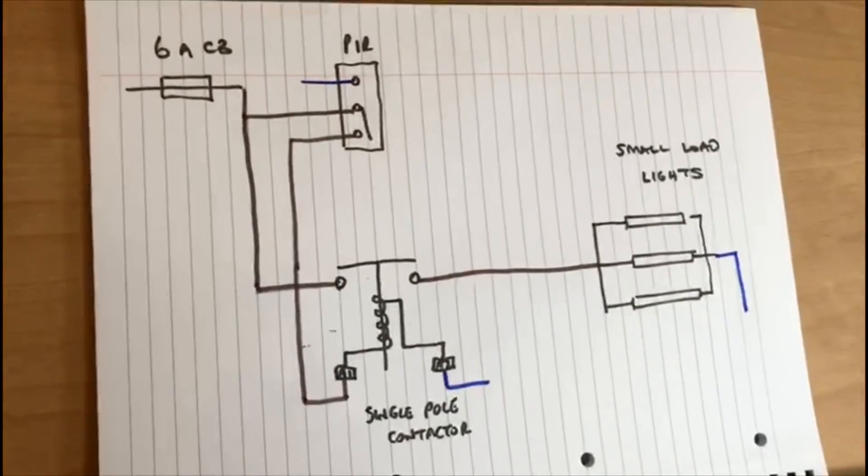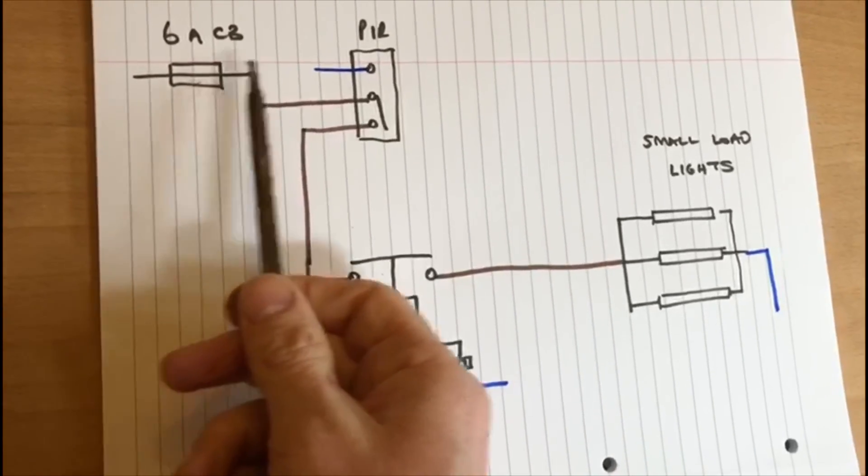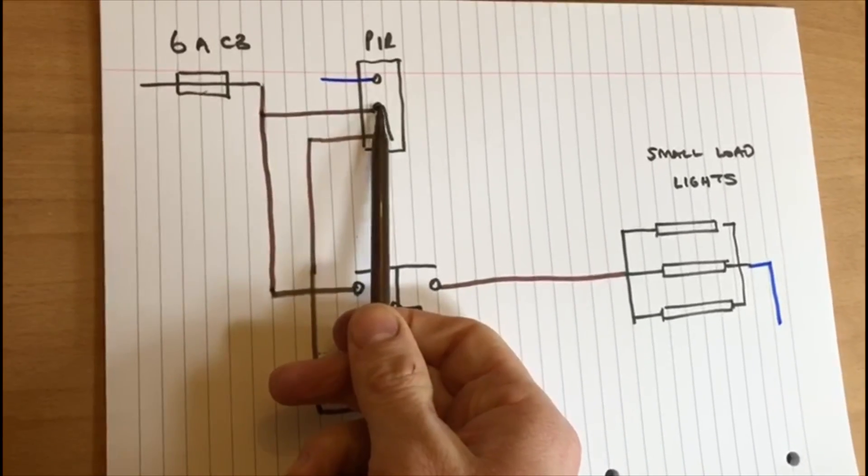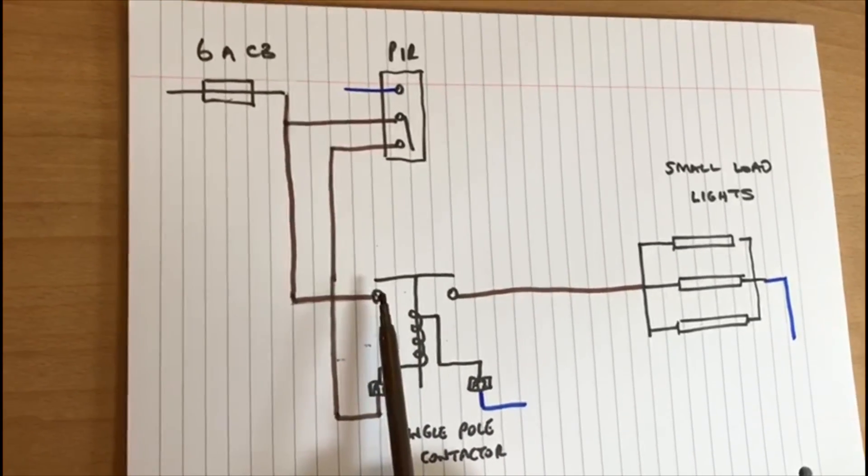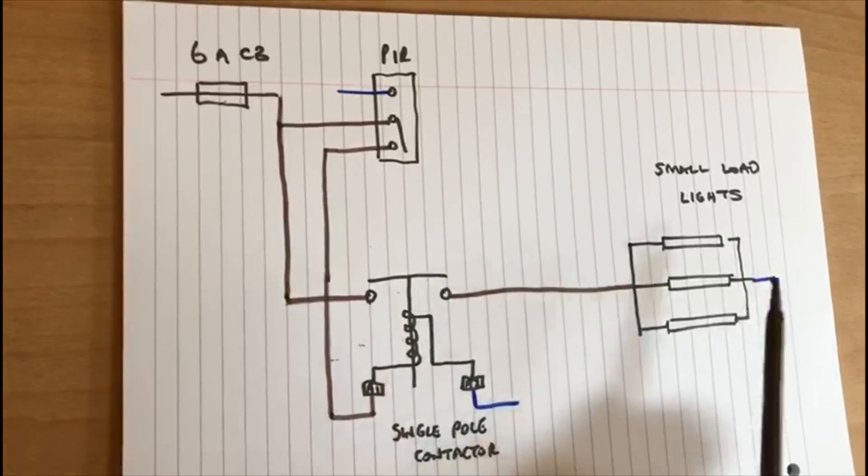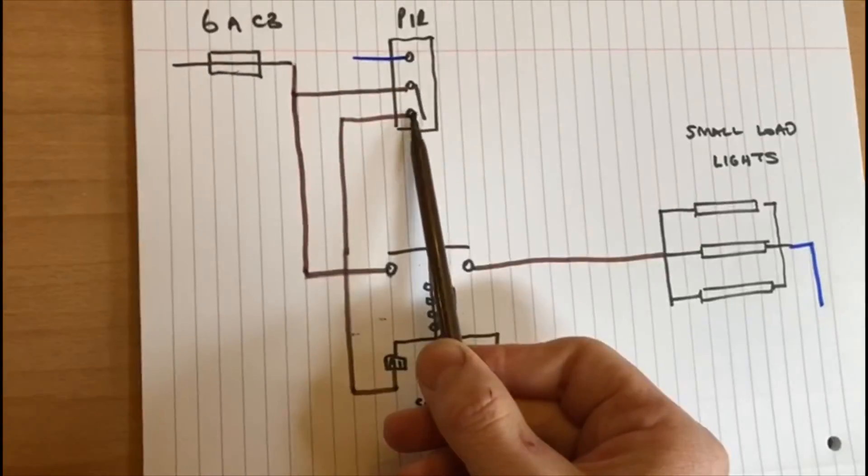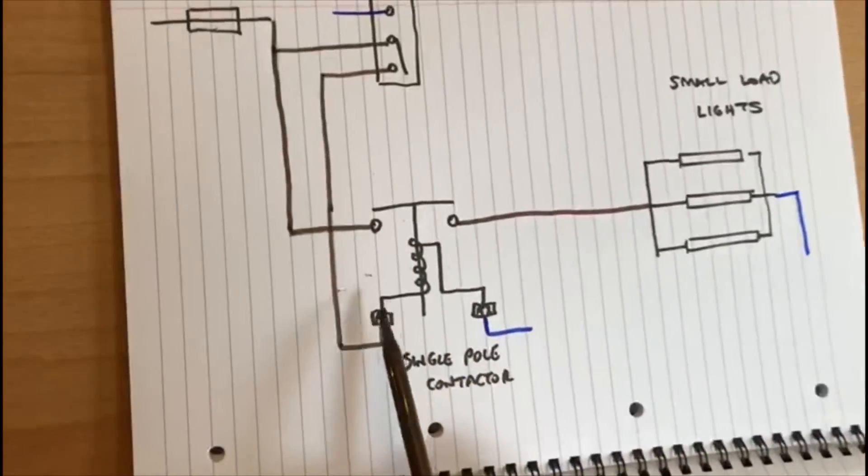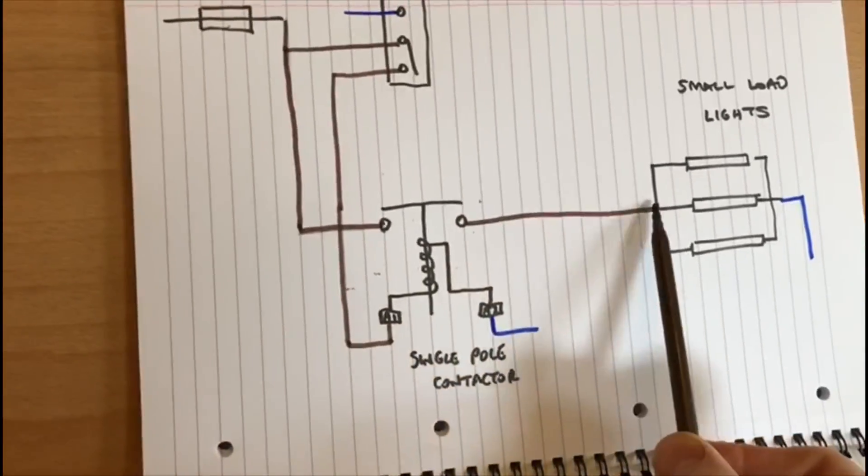So let's just look at this again. We have a six amp feed that's got a permanent live feed going to the PIR, and it's also got a permanent live feed going to the contactor. We obviously have our neutrals going how they are, and we then have a switch feed that's controlling the coil down to A1, and then we have our connection going across to the lights.